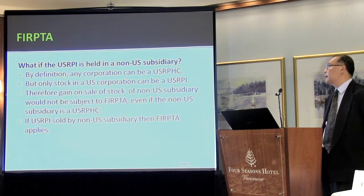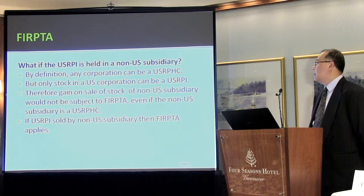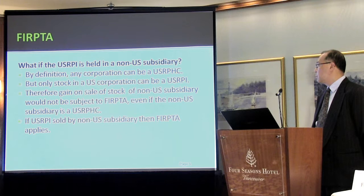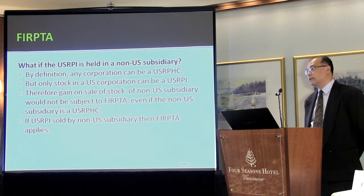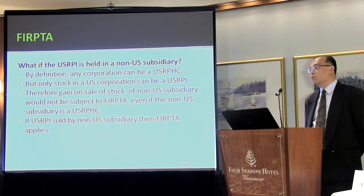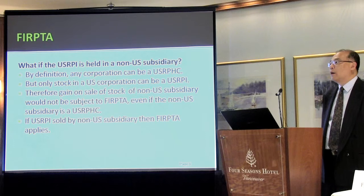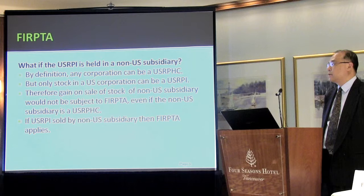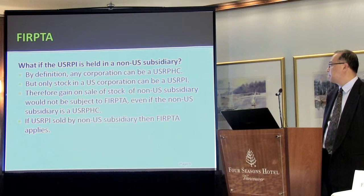There is one way you can plan around these rules — not circumvent, but plan around. The definition of U.S. real property holding company applies to any company passing that threshold, but the definition of U.S. RPI is only targeted at U.S. corporations. So you could have a foreign corporation that has nothing but U.S. real estate — it would be a U.S. real property holding corporation, but its stock won't be U.S. RPI. So if a Canadian parent sets up a Canadian sub, and that sub buys a piece of U.S. land, you can technically sell the stock of the Canadian sub and not be subject to U.S. FERPTA.